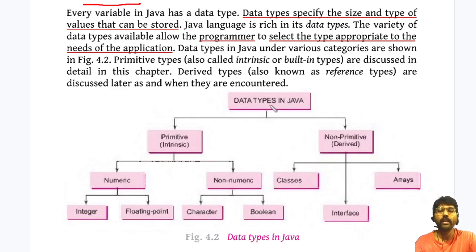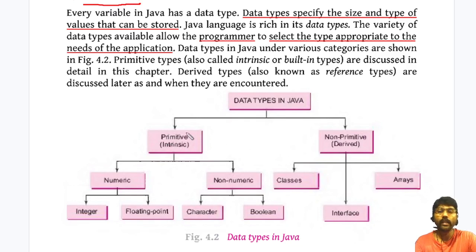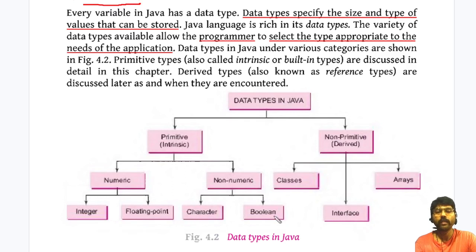In Java, data types are divided into two types: primitive, also called intrinsic, and non-primitive, also called derived. Primitive data types are categorized into numeric and non-numeric. Numeric includes integer and floating point, while non-numeric includes character and boolean. Non-primitive data types are divided into classes, arrays, and interfaces.